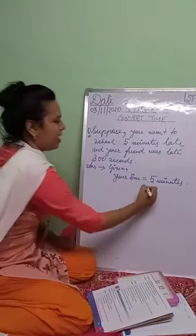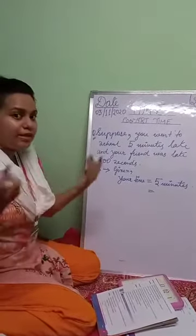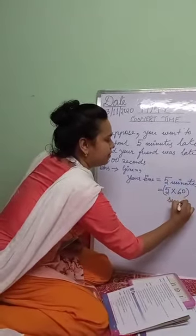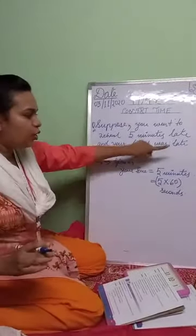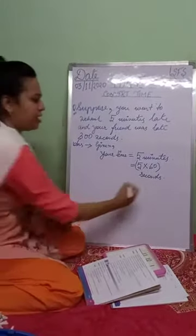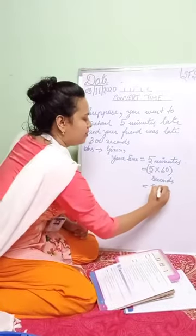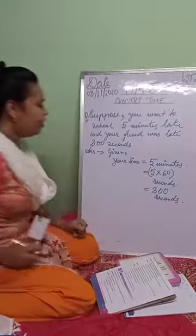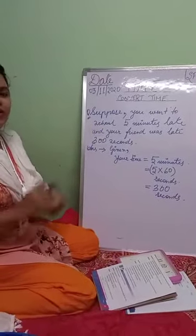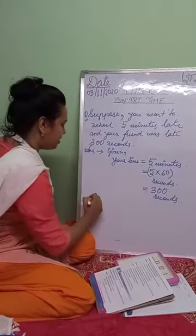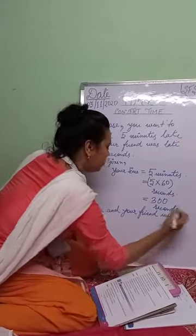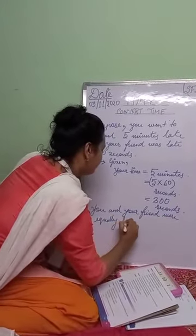Your time is five minutes. Five minutes converted into seconds: one minute equals sixty seconds, so five minutes equals five into sixty seconds — that is three hundred seconds. So you were also three hundred seconds late! That means you and your friend were equally late. You were equally late.